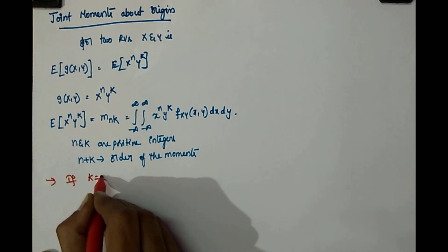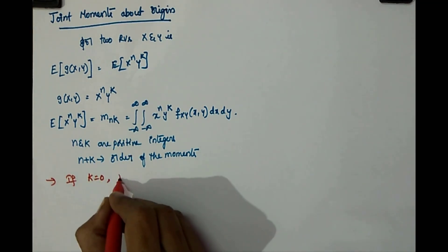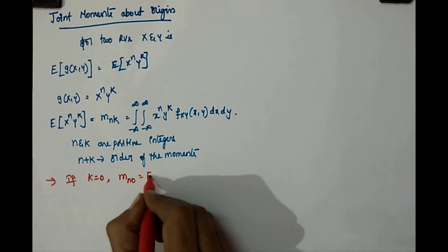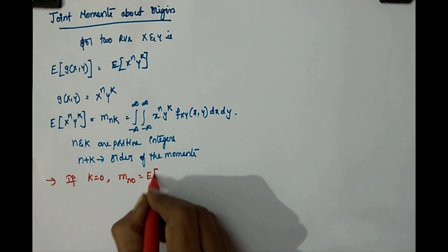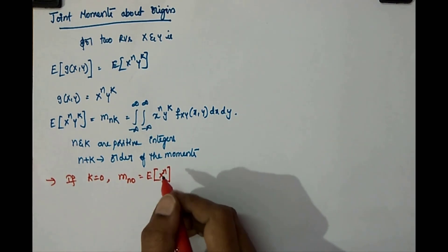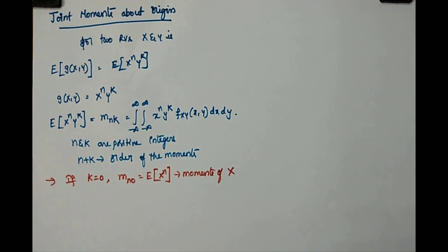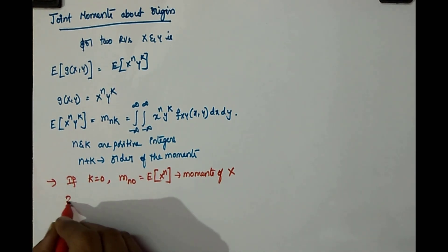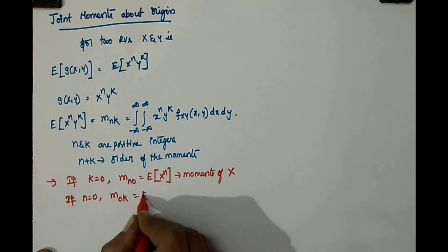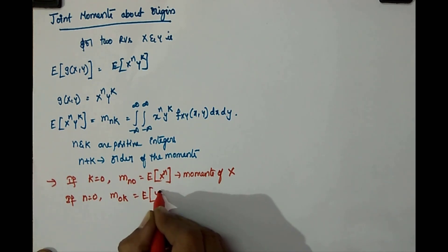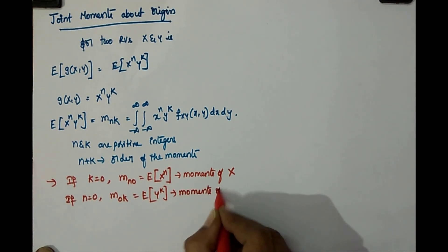If k equals 0, we get m_{n0}, which becomes E[x^n] — the moments of x. If n equals 0, we get m_{0k}, which equals E[y^k] — the moments of y.